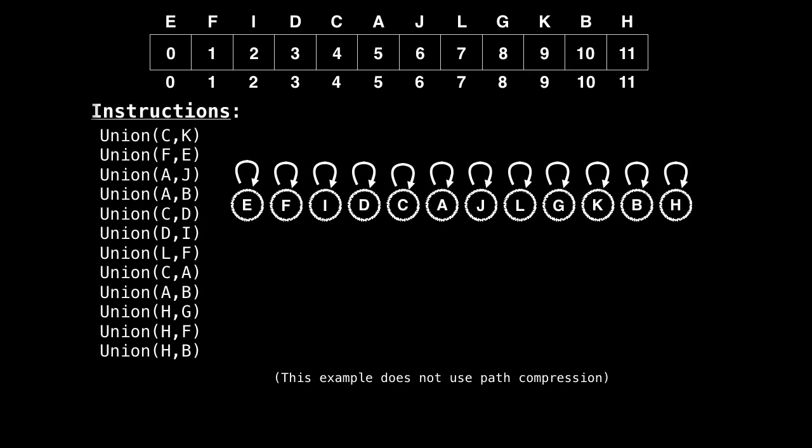The value in the array for each position is currently the index which it is at. This is because originally every node is a root node, meaning it maps to itself.